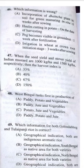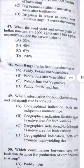Question 48: West Bengal ranks first in the production of which commodity? Answer B — West Bengal ranks first in production of paddy, jute, and vegetables.